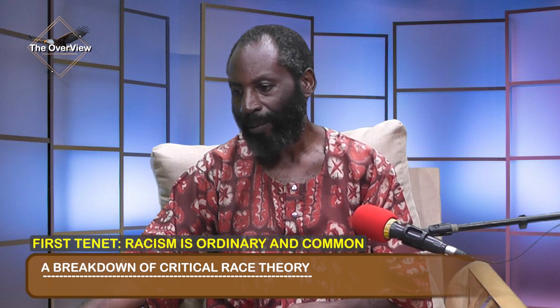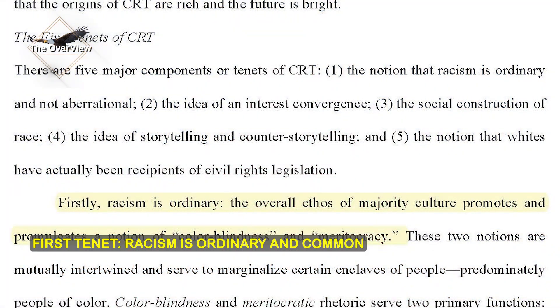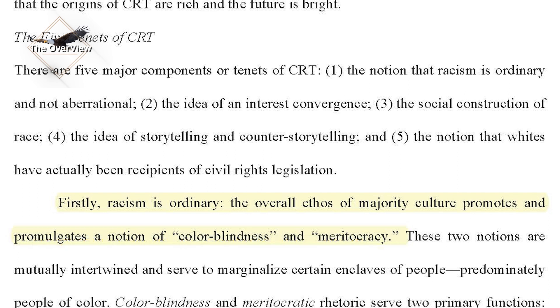The first tenet of critical race theory is that racism is ordinary and common. This basically means that, as any Black person in the West knows, racism is an ordinary feature of life — even though you may not experience it every day, in certain situations you will experience it.